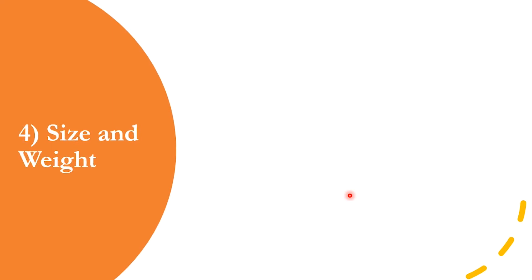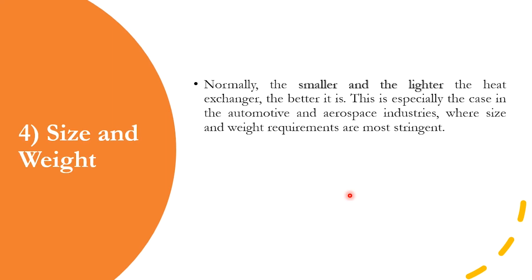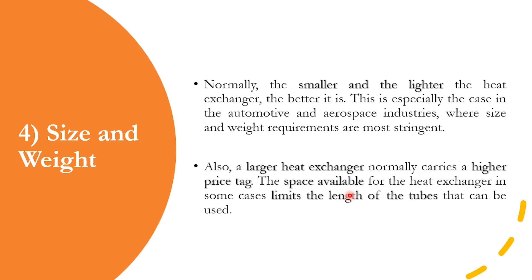Number four is size and weight. You always want lesser weight and smaller size, which is especially critical in aerospace and automotive industries. For a real plant, size and weight are obviously larger, but space requirements dictate what can be installed — you cannot have too long or too bulky a heat exchanger, as these are constrained by available space.